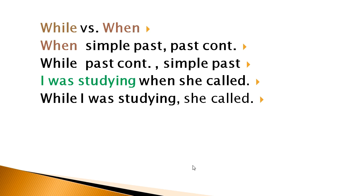We often use 'while' and 'when' with the past continuous. You can say: when + simple past + past continuous, or while + past continuous + simple past. For example: 'I was studying when she called' — past continuous, then 'when,' then simple past. Or: 'While I was studying, she called.' She called when I talked on the phone. While I was talking to my friends, the doorbell rang. If you have any questions regarding the past continuous, please put them below.